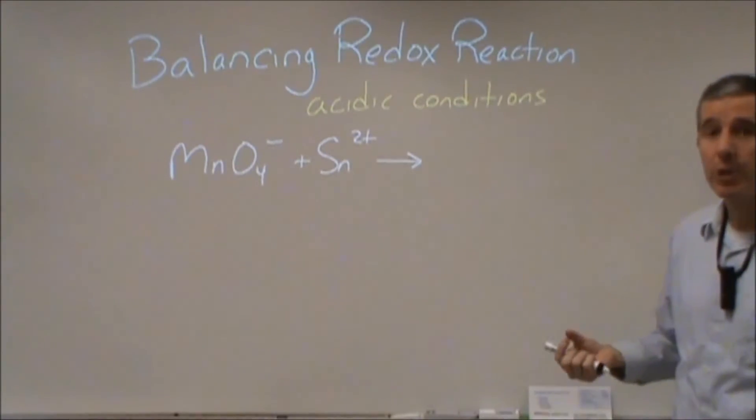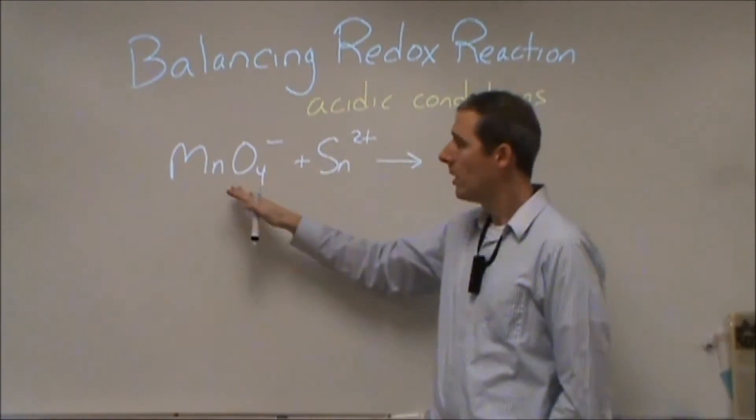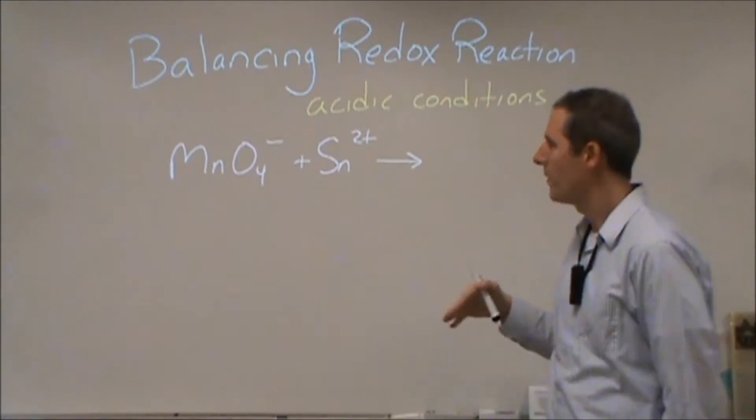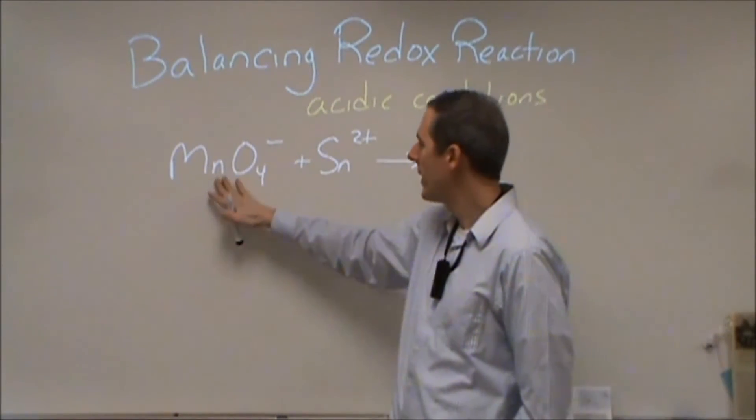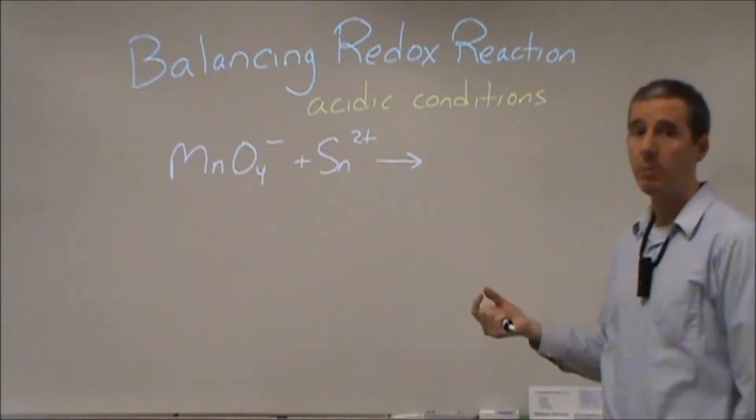So balancing redox reactions is very challenging. There's a lot of small components. One of the biggest ones is that when you start, you need to get rid of your spectator ions. If you're trying to balance a potassium permanganate or a Sn2+ chloride, it's going to be a lot more challenging than if you can get to the point where we are now.